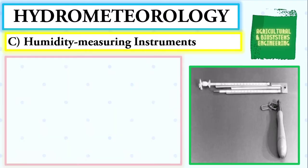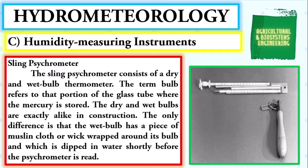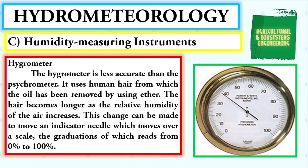Next, we proceed with the instruments used to measure humidity. We begin with the sling psychrometer, which consists of a dry and wet bulb thermometer. The term 'bulb' refers to that portion of the glass tube where the mercury is stored. The dry and wet bulbs are exactly alike in construction; the only difference is that the wet bulb has a piece of muslin cloth or wick wrapped around its bulb, which is dipped in water shortly before the psychrometer is read.